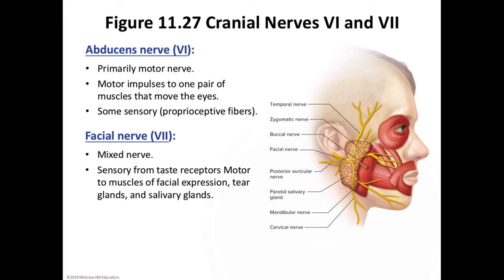Cranial nerve number seven is the facial nerve. Facial nerves are mixed nerves that arise from the lower part of the pons and emerge on the sides of the face. Their sensory branches are associated with taste receptors on the anterior two-thirds of the tongue, and some of their motor fibers conduct impulses to the muscles of facial expression — see figure 11.27.